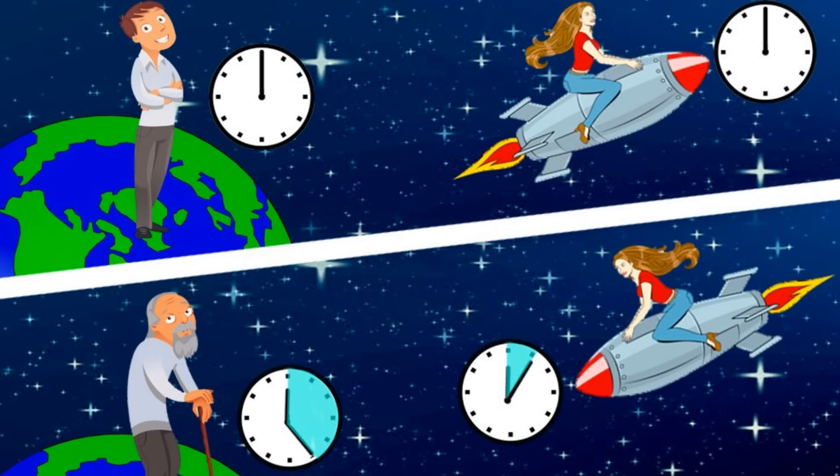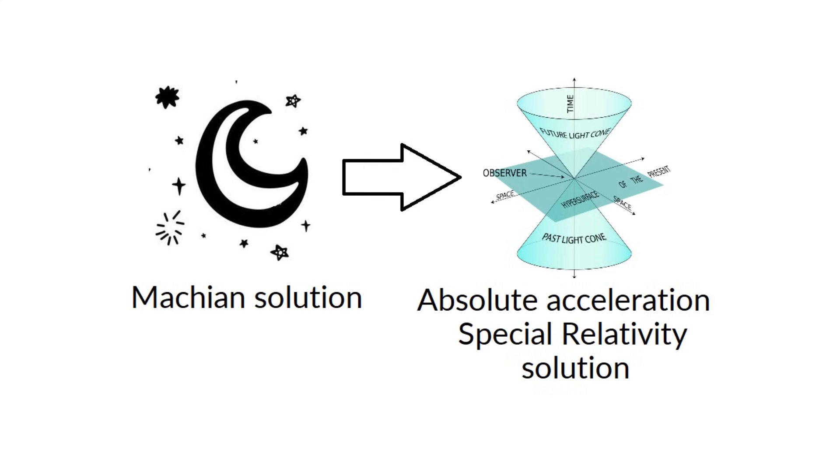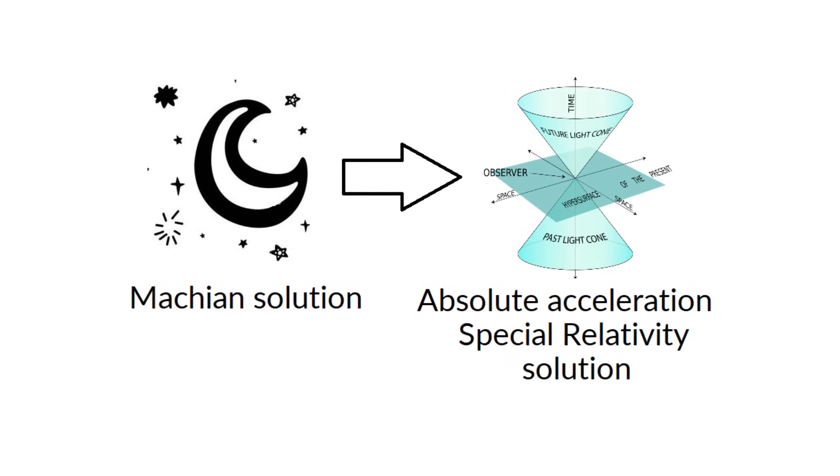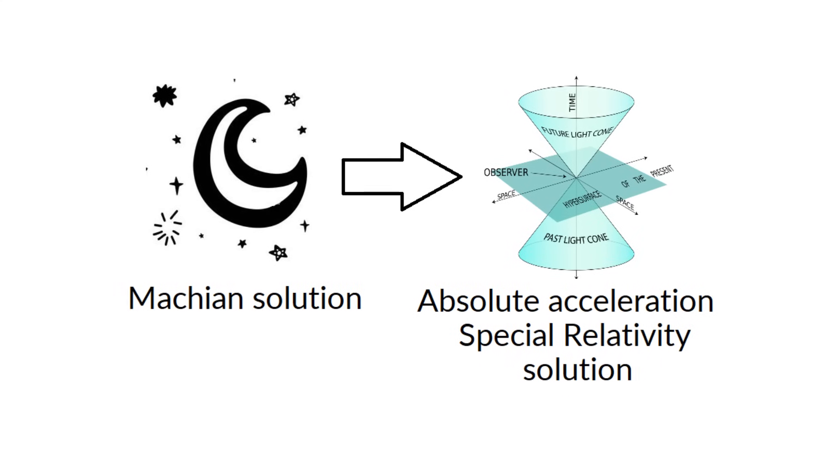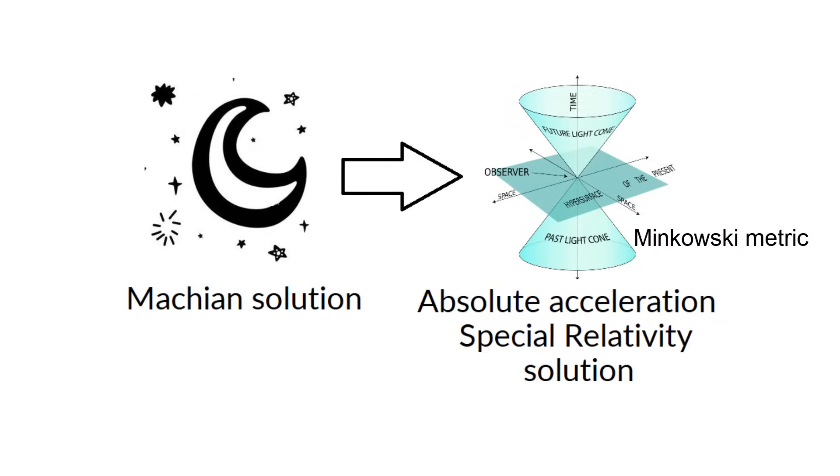Following Mach, the solution of the twin paradox is simple. The observer experiencing time dilation is the one who accelerates with respect to the rest of the masses of the universe. And special relativity somehow substitutes the frame of the rest of the universe with the spacetime background of the Minkowski metric.